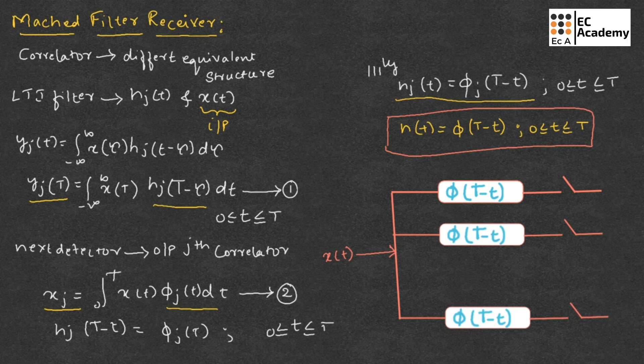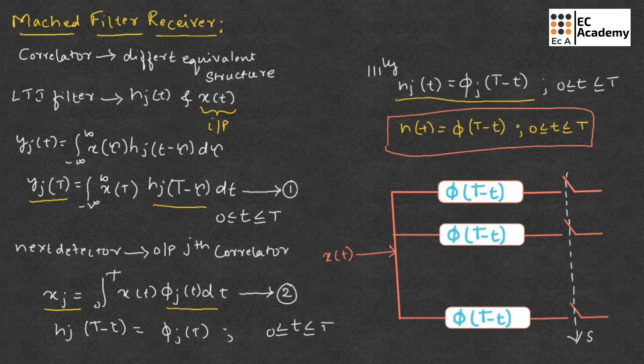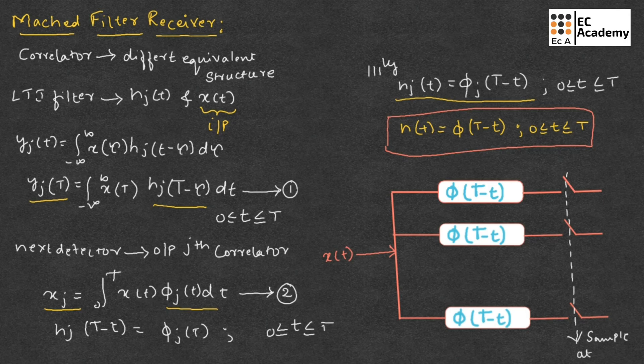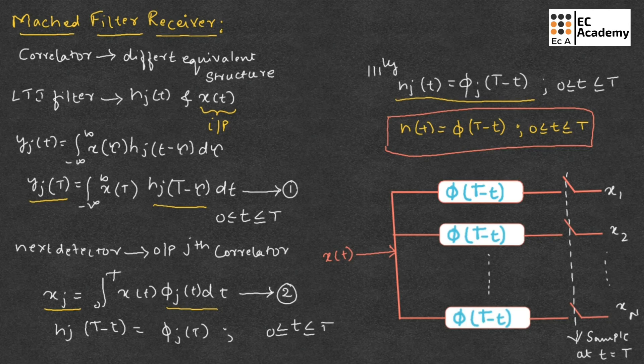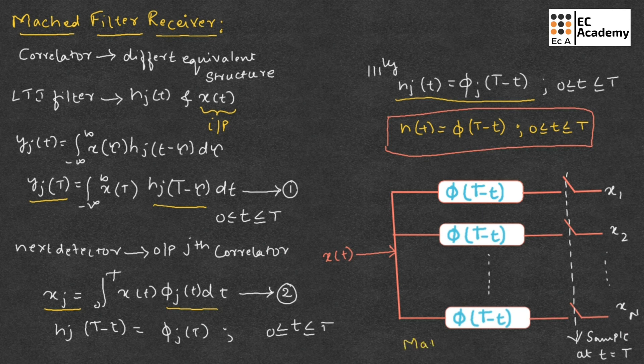If we give input to this as received signal x of t and if we sample this at t is equal to capital T, we will get output as x1, x2 and so on as x capital N. So here also we need to write multiple levels. So this is the representation of matched filter.